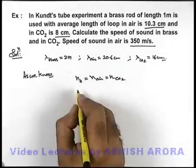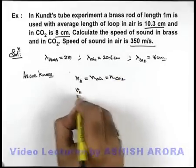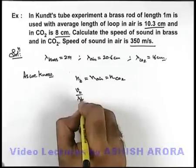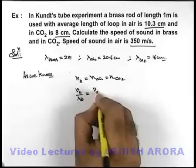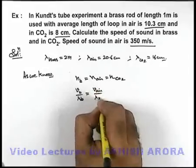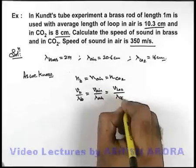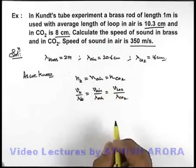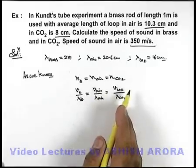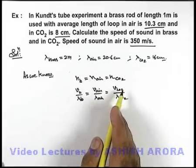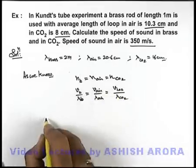So we can simultaneously write speed in brass by lambda in brass is equal to speed in air by lambda in air is equal to speed in carbon dioxide by lambda in carbon dioxide. As for all propagations frequency remains constant, so from here we can easily get the value of speed in brass.